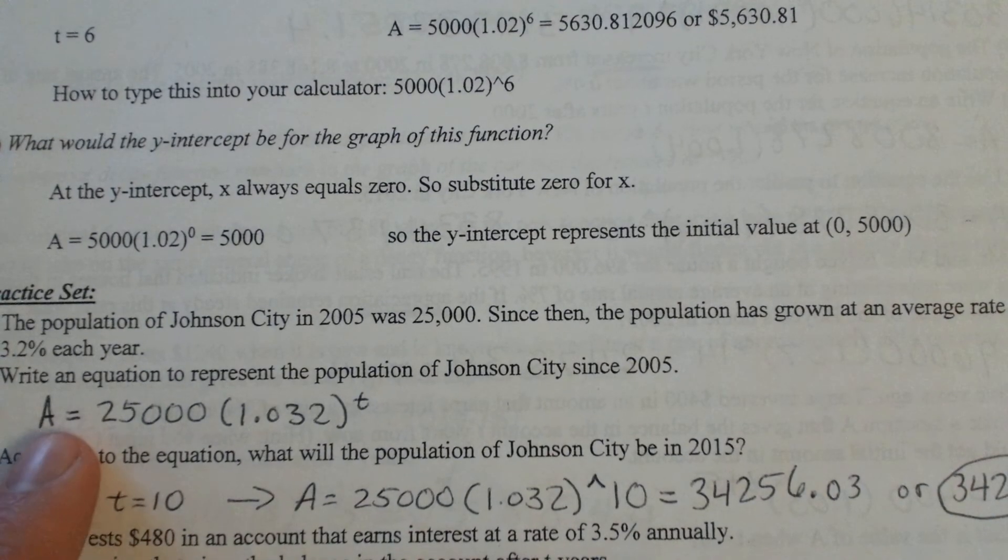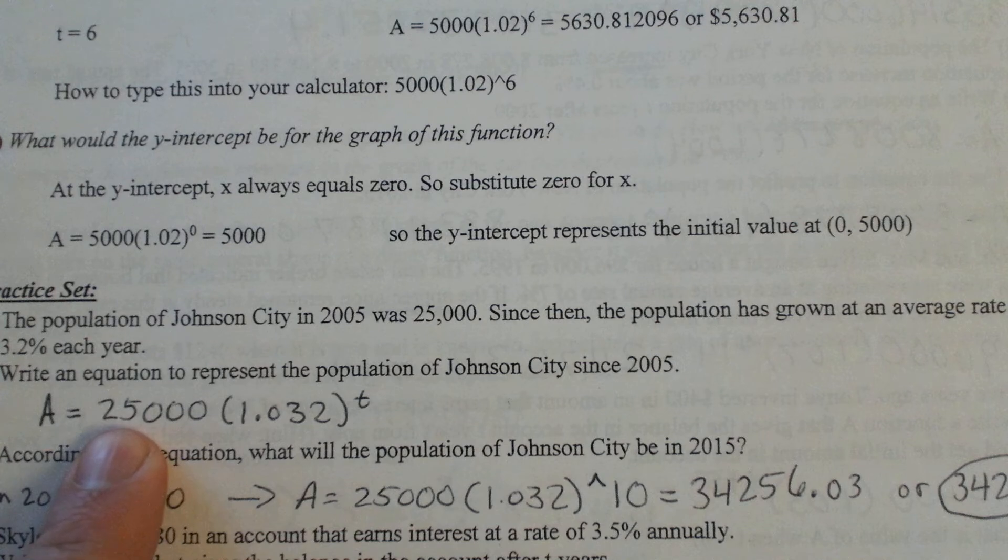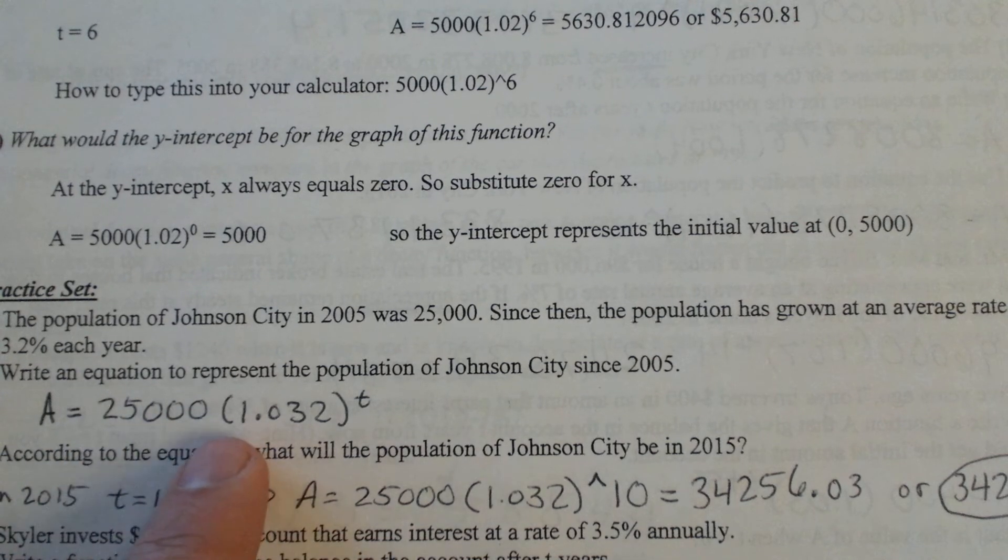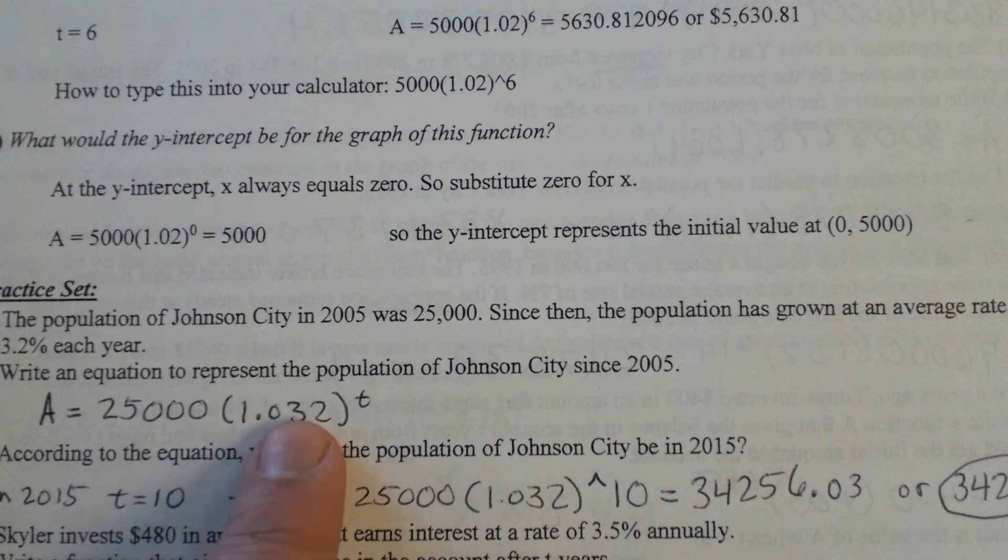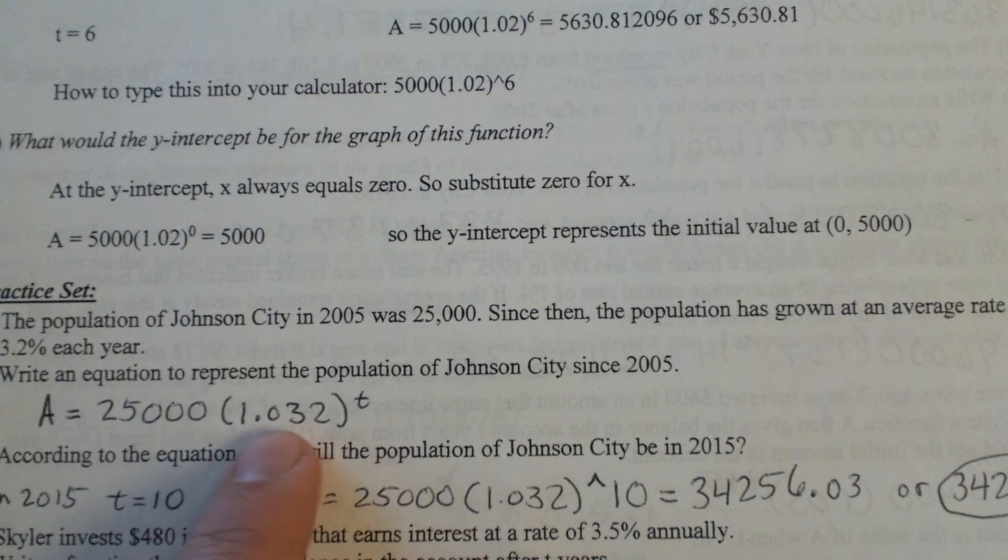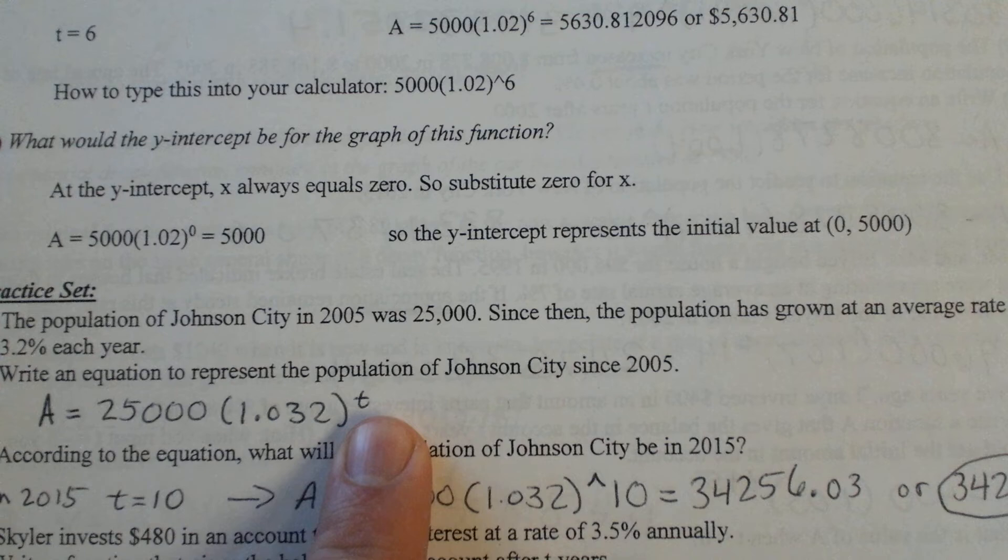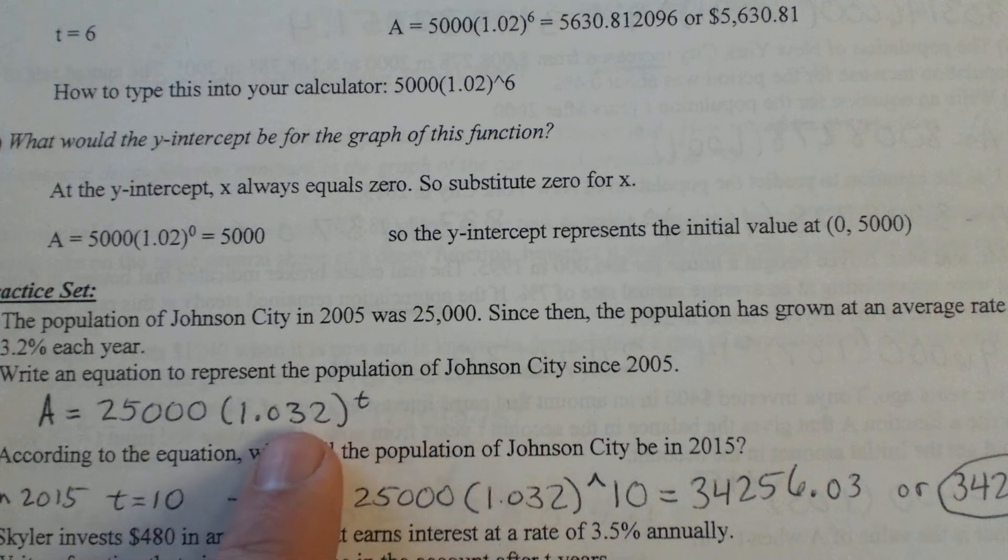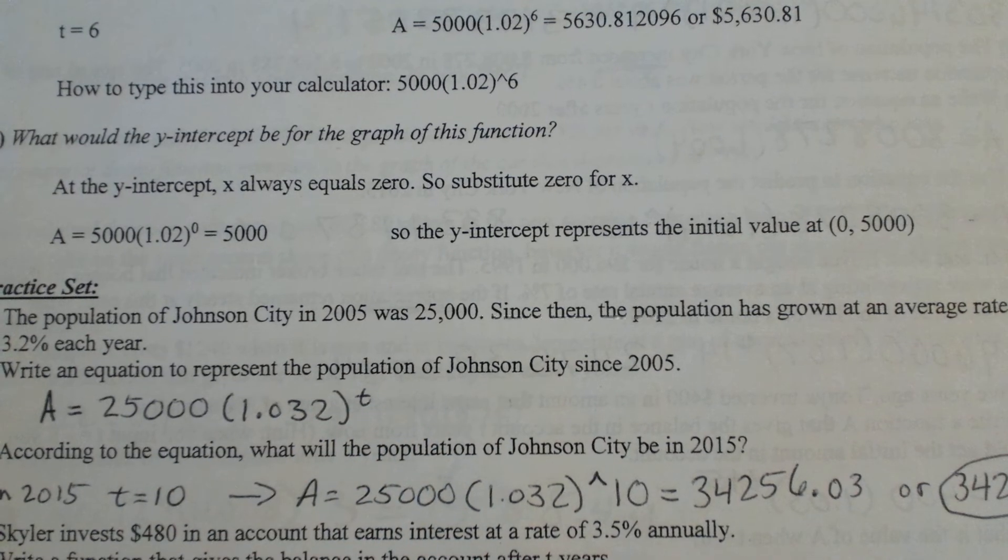So again, you've got your A equals, you've got your initial amount which was 25,000. We've got our 1 plus the rate, and then you simplify it to get rid of the plus sign, and then to the t power. And remember, we convert that rate to a decimal place.